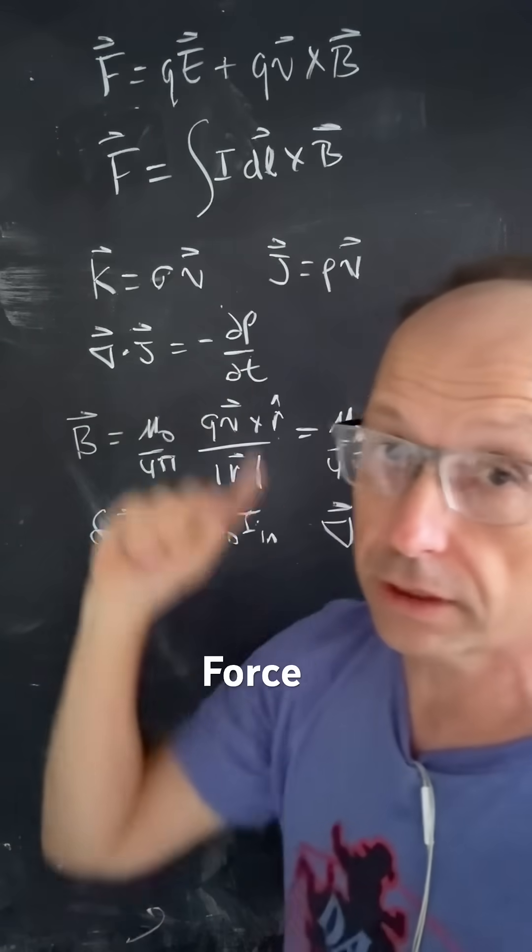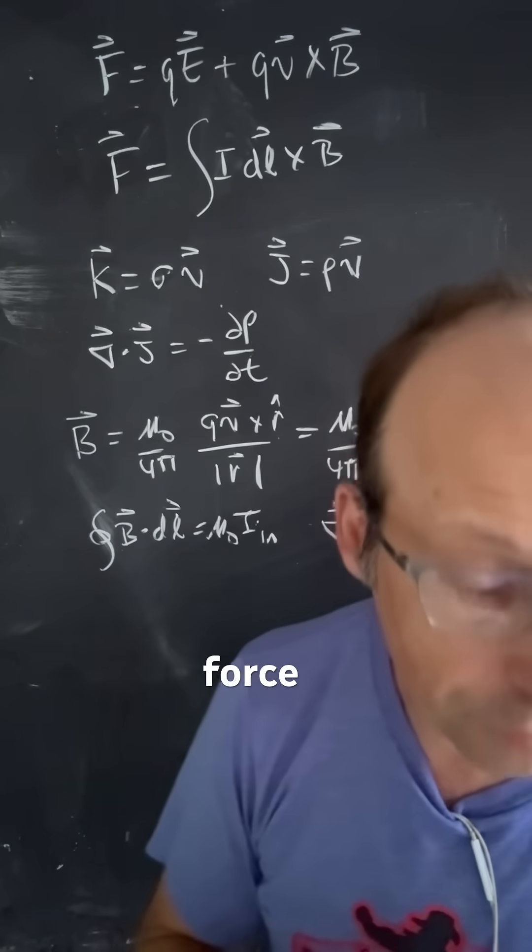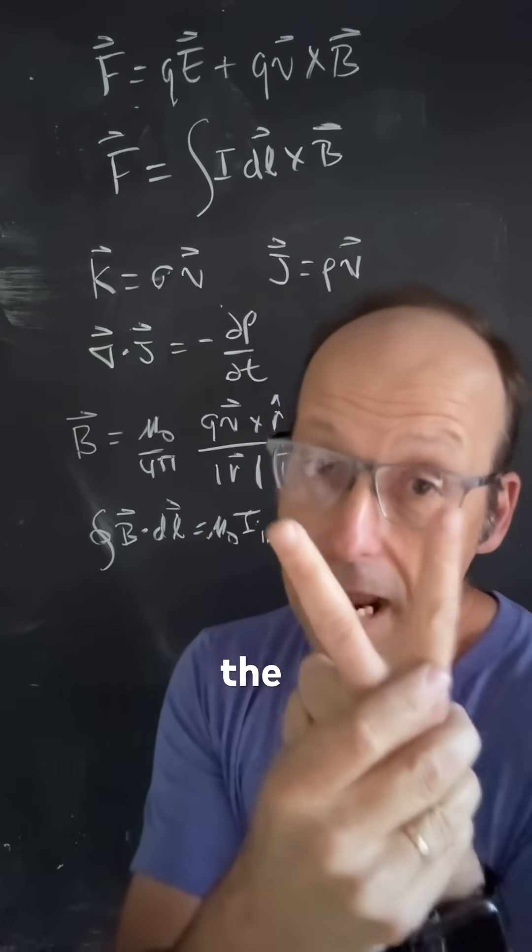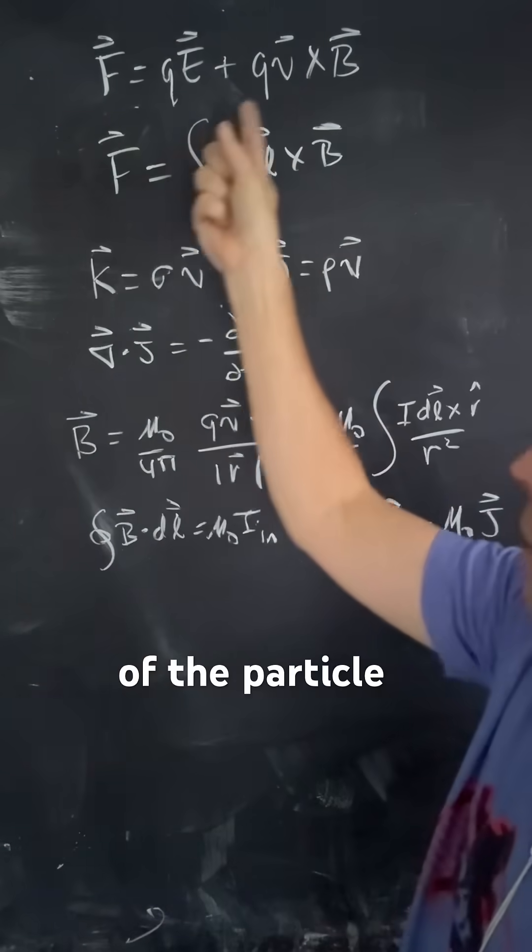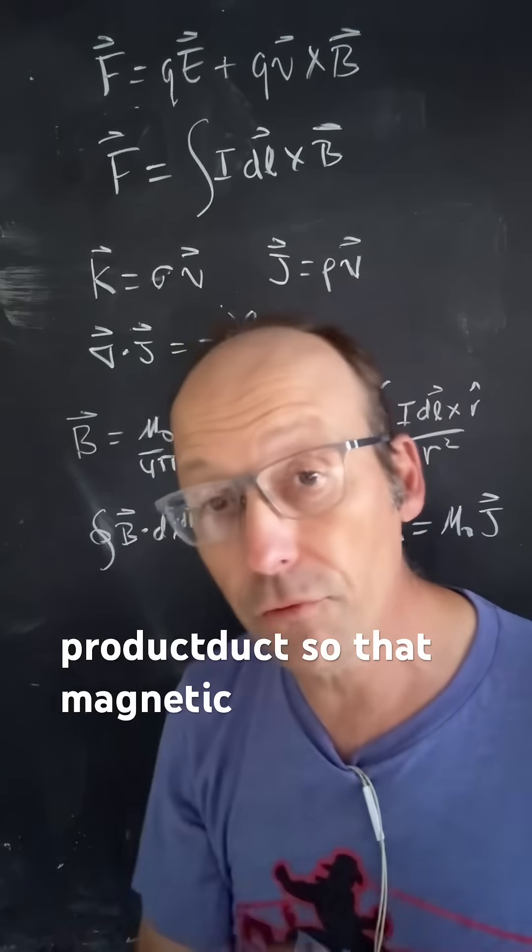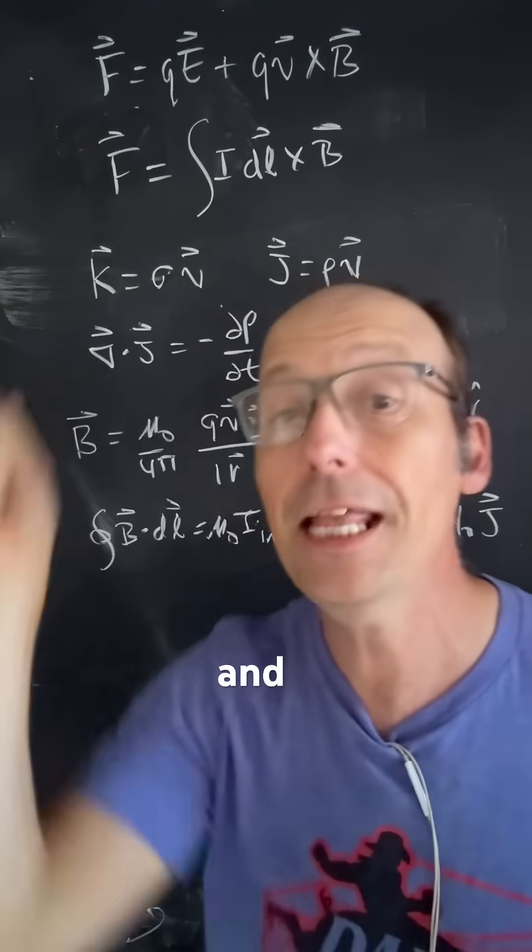Number 1 is this. That's the Lorentz force. This says that a force on a charged particle depends on the electric field, the magnetic field, and the velocity of the particle. So here we have that QV cross B, and that is a cross product, so that magnetic force is perpendicular to both the velocity and the magnetic field.